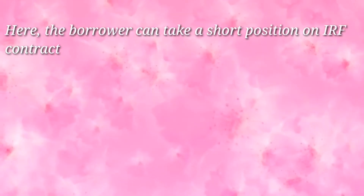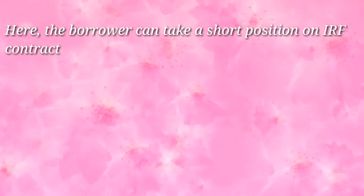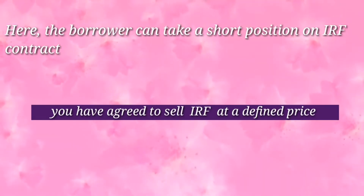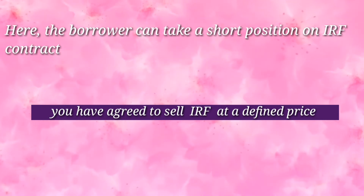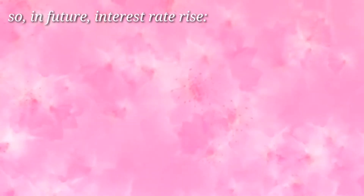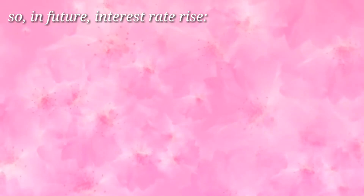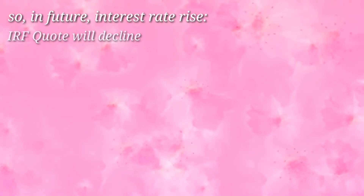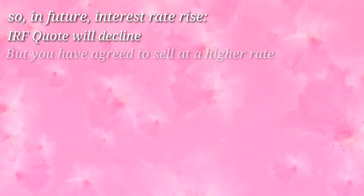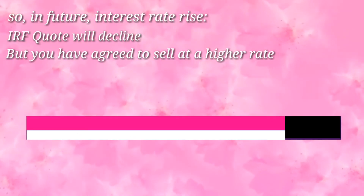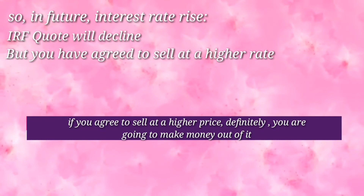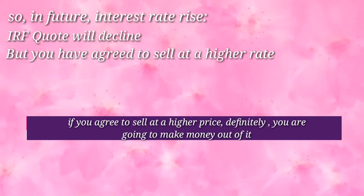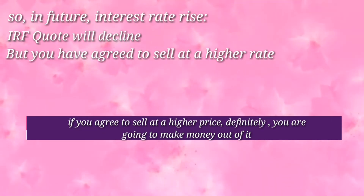So the borrower can take a short position on an IRF contract. A short position means you have agreed to sell IRF at a defined price. In the future, when interest rates rise, what happens to the IRF contract? The IRF quote will decline. But since you agreed to sell at a higher price, you are going to make money out of this.